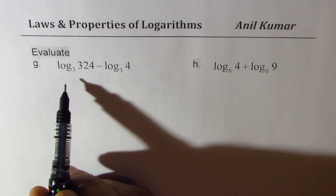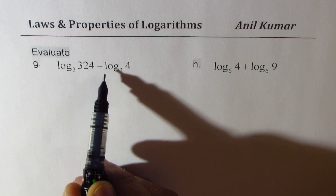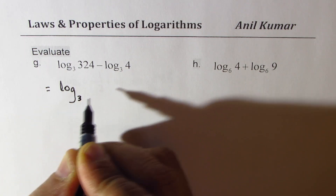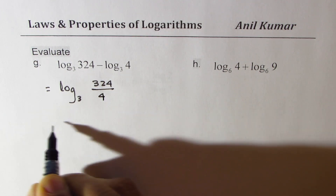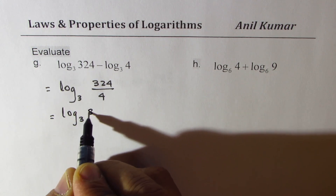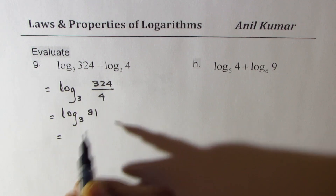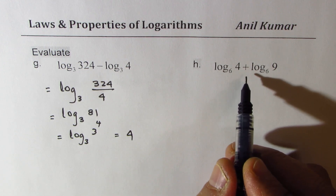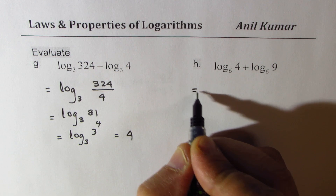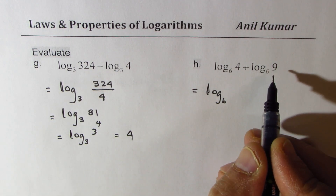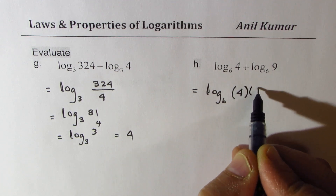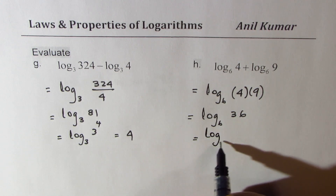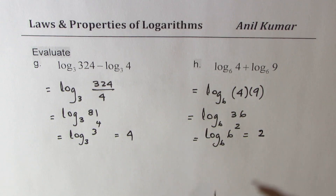Let's move forward. Applying the rules: log to the base 3 of 324 minus log to the base 3 of 4. Same base, so we divide: log to the base 3 of (324 ÷ 4) = log to the base 3 of 81. Since 81 = 3 to the power of 4, the answer is 4. Next, log to the base 6 of 4 plus log to the base 6 of 9: a plus means we multiply, giving log to the base 6 of 36. Since 36 = 6², the answer is 2.